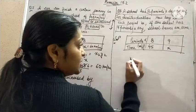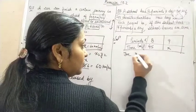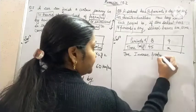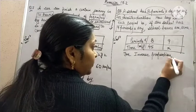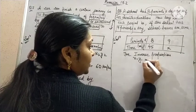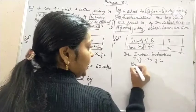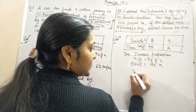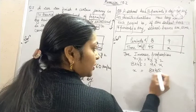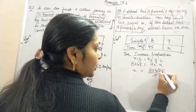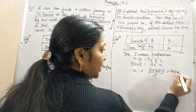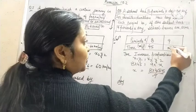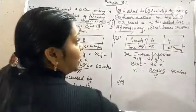For inverse proportion, we have X1·Y1 is equal to X2·Y2. 8 into 45 is equal to 9 into X. X will be equal to 8 times 45 divided by 9, that is equal to 40 minutes. So each period should be of 40 minutes.